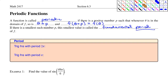Trigonometric functions have periods as well. The trig functions with a period of 2π — they repeat every 2π or 360 degrees — are sine, cosine, and their reciprocals secant and cosecant. However, it doesn't take as long for tangent and cotangent to repeat — it only takes π. So the period of tangent and cotangent is π, or 180 degrees.